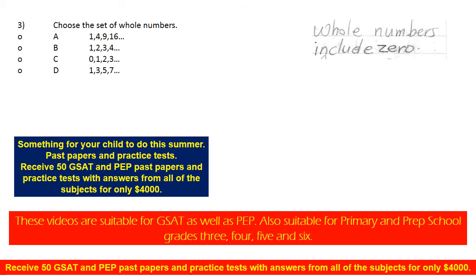D says 1, 3, 5, 7, and so on. What is D? D would be odd numbers. Odd numbers, when you divide them by 2, there is always a remainder of 1. So the numbers 1, 3, 5, 7 are odd numbers.